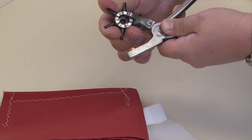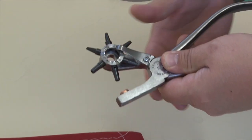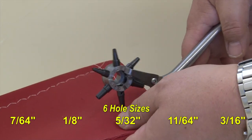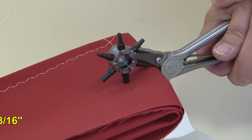This tool will cut 6 sizes of holes from 3/32 inch all the way to 3/16 of an inch. You can rotate the head by hand to pick a different size hole.